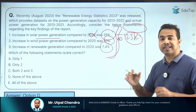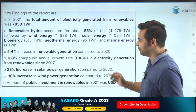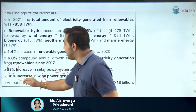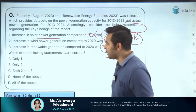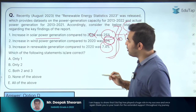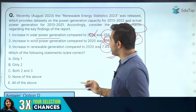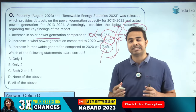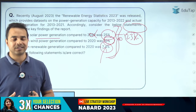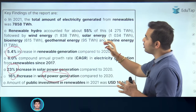Examiners often twist values in such questions. None of the statements mentioned are correct. The correct values are: solar power generation increased by 23% (not 25%), wind power generation increased by 16% (not 10%), and overall renewable generation increased by 5.4% (not 7.4%). These slight changes in values are how questions are directly asked in the exam from such reports.